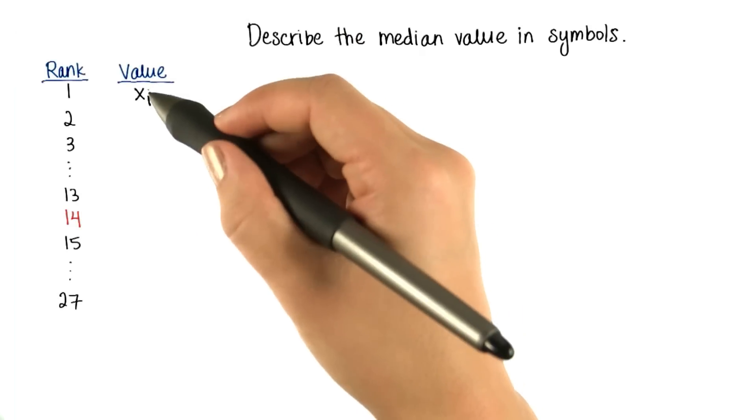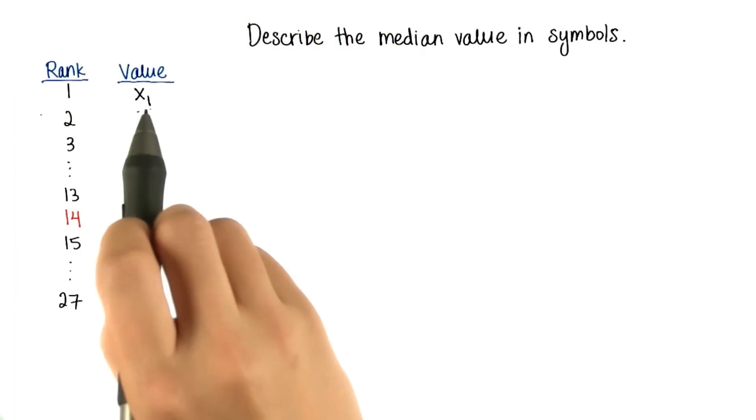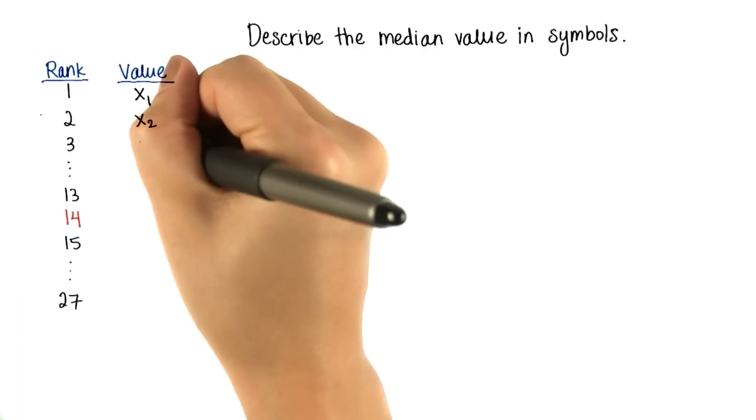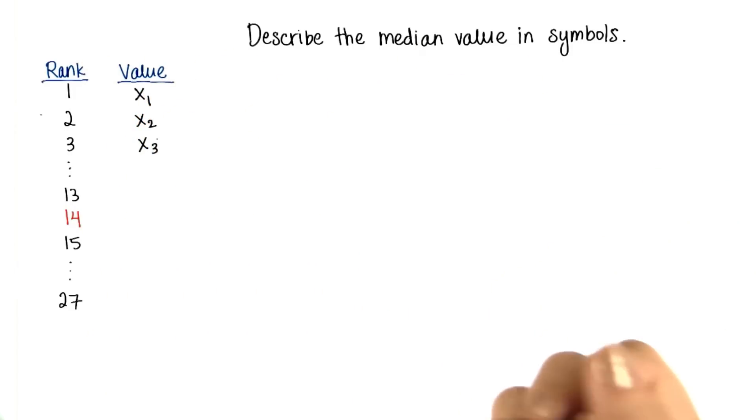We can denote the actual value in terms of its rank. So the value in the first rank would be x sub 1, then x sub 2 for the second rank, x sub 3 for the third.